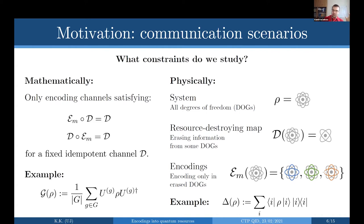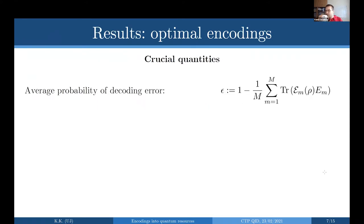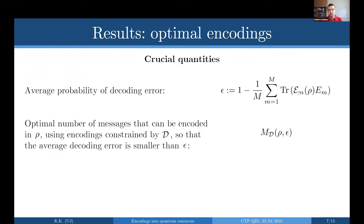Now let me introduce the crucial quantities. The average probability of decoding error characterizes how well the communication between Alice and Bob goes on average. The optimal number of messages M_D that can be encoded in rho using encodings constrained by the resource-destroying map D, such that the average decoding error is smaller than epsilon — so M_D tells us the optimal number of messages. For example, if M_D equals five for epsilon equal to one percent, Alice can send five messages to Bob with an average error of one percent.